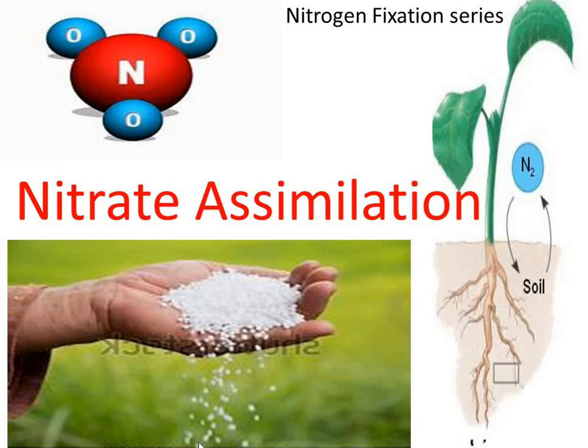Plants assimilate most of the nitrate absorbed by their roots into organic nitrogen compounds. This process takes place in two steps: in the first step, nitrate is converted into nitrite, and in the second step, nitrite is converted into ammonia.